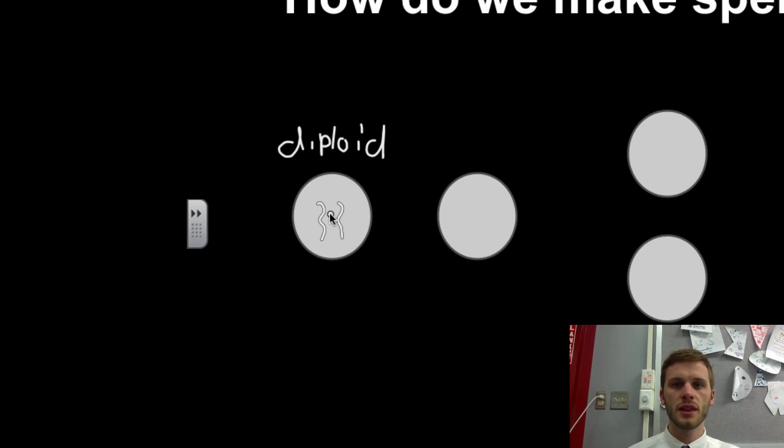Next, to actually create the sperm and the egg, we're going to have to double the amount of chromosomes or DNA within that cell. So when we double that, these two chromosomes right here are going to go from two to four.